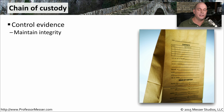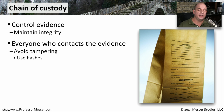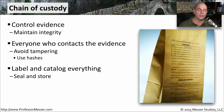During the investigative process, it's common to have a chain of custody. You have a piece of evidence, and you need to know where that evidence is at all times and who's in control of it. There will be documentation of every person who touched this evidence. If it's digital information, we can even perform hashes of that data so that later on we can compare the hash to make sure that nothing was changed. Physical devices and storage devices can be labeled and sealed, and that way you can control access to all of those pieces of information.